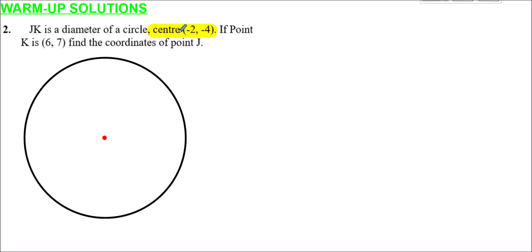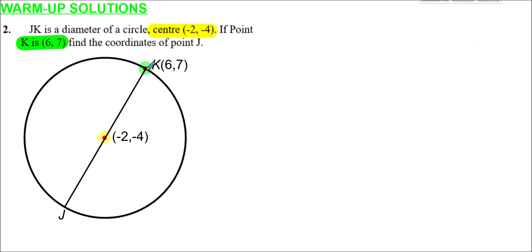We know the center is (-2, -4), so we add that to our diagram. We also know K is at (6, 7), which we label on the diagram. Since 6 is greater than -2, K is to the right of the center, and since 7 is greater than -4, K is above the center. We're told JK is a diameter, so J will be on the other side of the center from K.